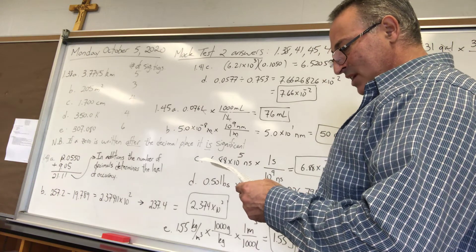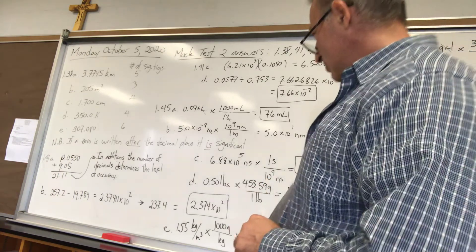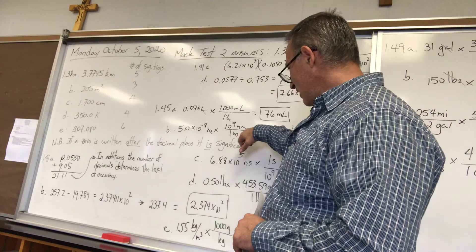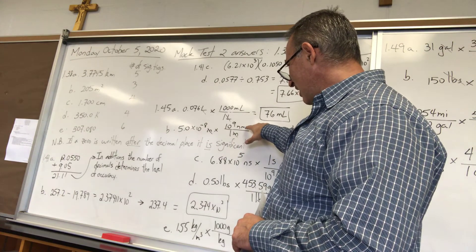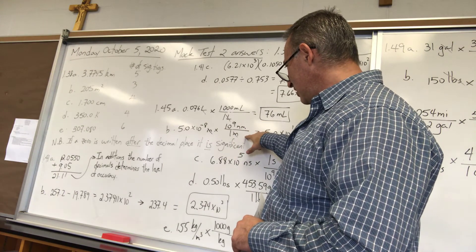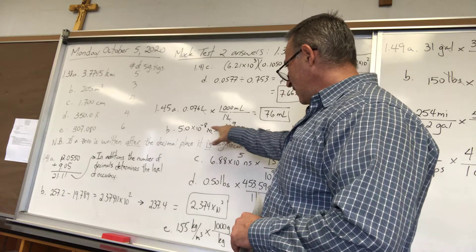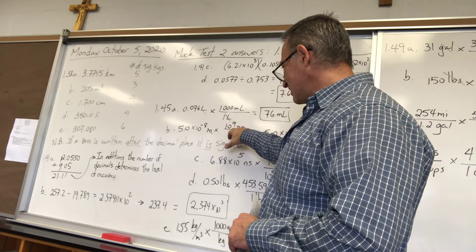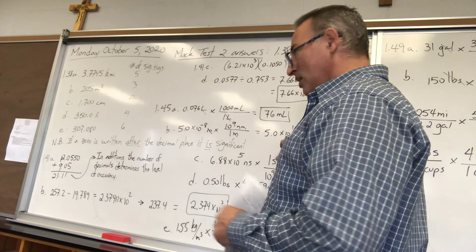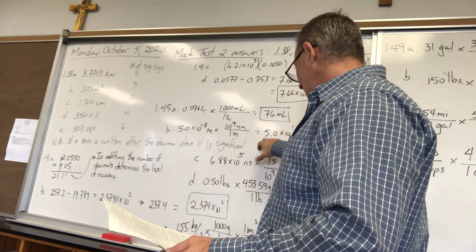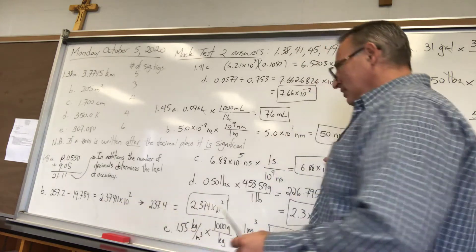B, 5.0 times 10 to the minus 8 meters turn it into nanometers. So we know that the conversion factor between nanometers and meters is 10 to the power of 9 nanometers in 1 meter. I put meters on the bottom so I can cancel meters. And then 10 to the minus 8 times 10 to the positive 9 gives you 10 to the positive 1 which is 10. So 5 times 10 gives you 50. There's your answer.